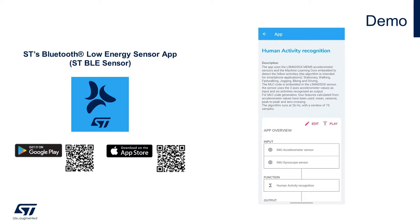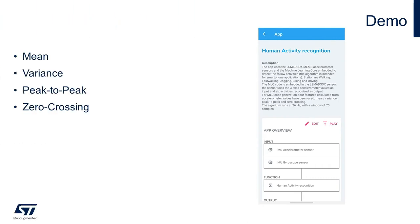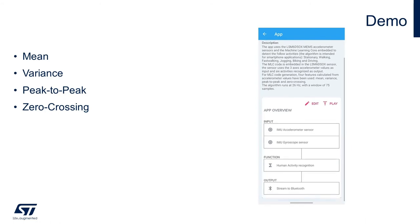That is very important. The features calculated within the machine learning core to support this example are mean value, variance, peak-to-peak, and zero crossing, and the algorithm runs at 26 Hz. To test the algorithm, you just need to click the play button on the top right corner of the app overview section.